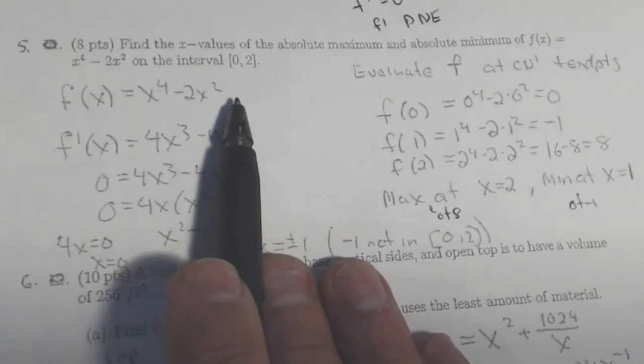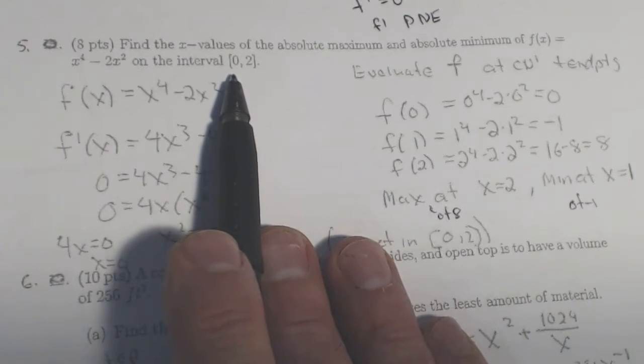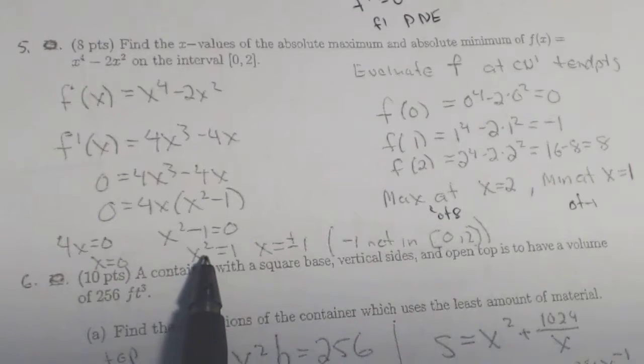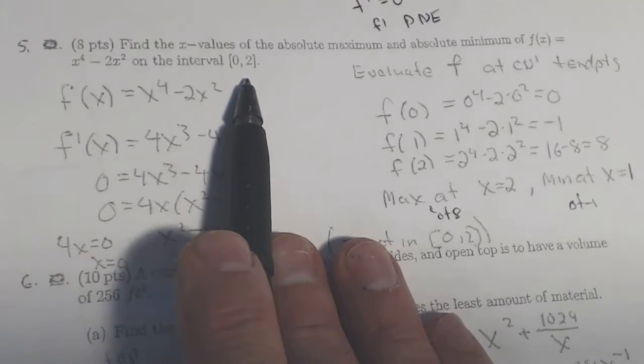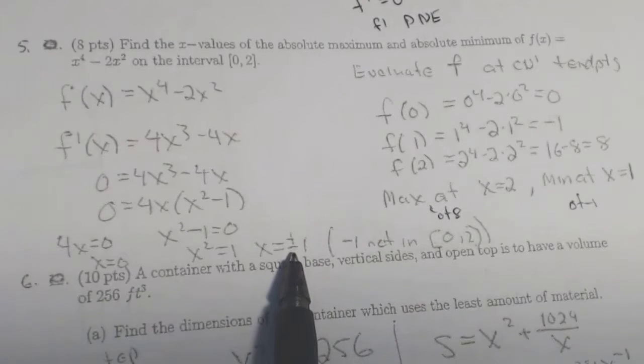Now, 0 was already one of our end points. That didn't add any new information. x equals plus or minus 1. The minus 1 is not between 0 and 2, but I will use the positive 1.